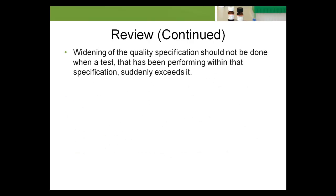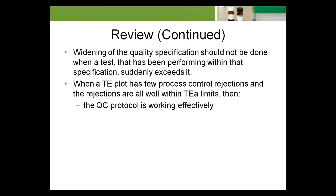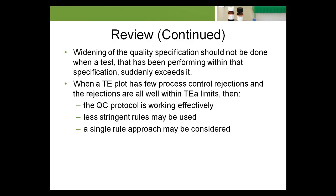Widening of the quality specification should not be done when a test that has been performing within that specification suddenly exceeds it. When a TE plot has few process control rejections and the rejections are all well within TEA limits, then the QC protocol is working effectively. Less stringent rules may be used, and a single rule approach may be considered.